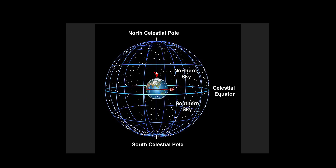Santa moves to the equator of the earth. At this point Santa sees the celestial equator at his zenith, and he sees the south celestial pole and north celestial pole if he just turns around. You can see both the north celestial pole and south celestial pole only from the equator of the earth. As the earth rotates, Santa will be able to see the other half of the sky as well, so Santa at the equator will have a chance to see the entire sky. The only observer that can see the entire sky is at the equator.